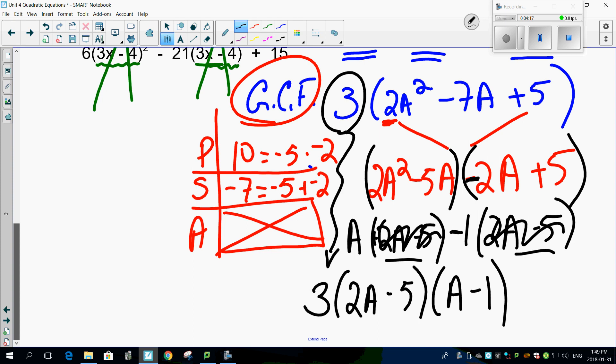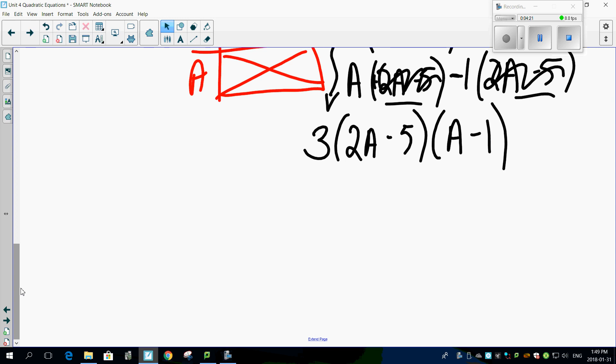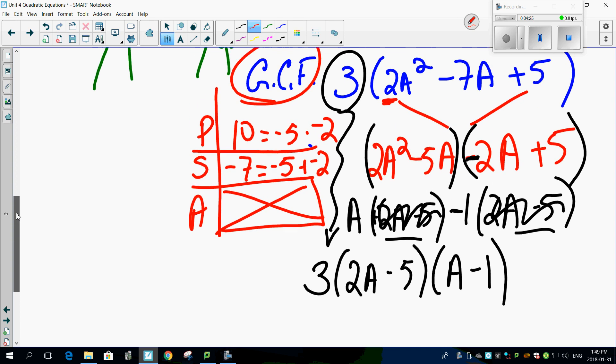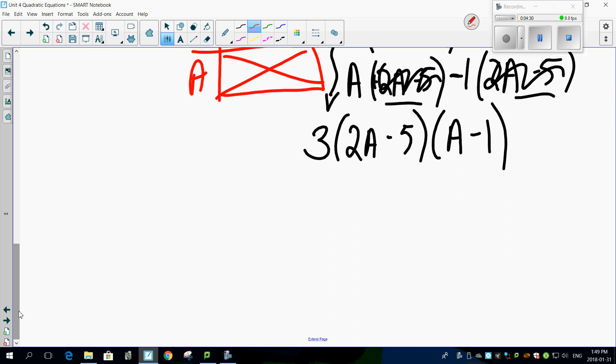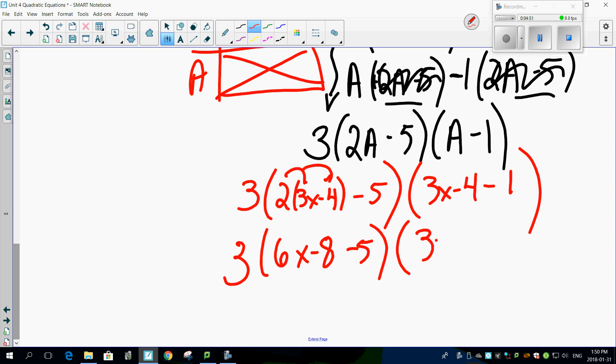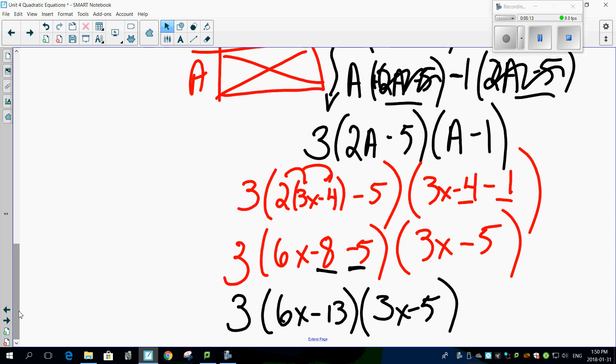Don't forget about that lonely old 3 out there. Otherwise, you'll get that wrong if you're factoring it. Now, the question is, what was A again? A was 3X minus 4. So let's pop that back in there. This becomes 3, 2 times 3X minus 4 minus 5, 3X minus 4 minus 1. Distribute, giving you 3, that'll be 6X minus 8 minus 5. And this will be 3X minus 5. Combine like terms. 3, minus 8 and minus 5 works out to be minus 13. So you got 6X minus 13, and finally 3X minus 5. A little bit of extra work when it's a PSA 2, but it could certainly save you a lot of time if you remember to look for the patterns.